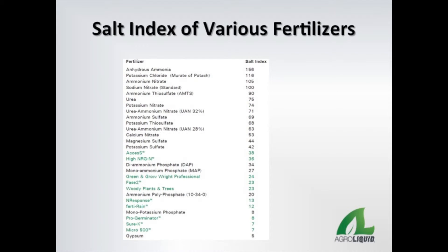This is a list of fertilizer products with their respective salt index values. The products listed in green are agri-liquid products. The salt index values of the fertilizer products run a range from 5 to 156. The agri-liquid products listed have a salt index of less than 40, where most of the nitrogen and sulfur products on this list are at a much higher value. Some of the literature suggests that if the salt index of a product is at or below 20, it is relatively safe to apply in-furrow next to the seed.